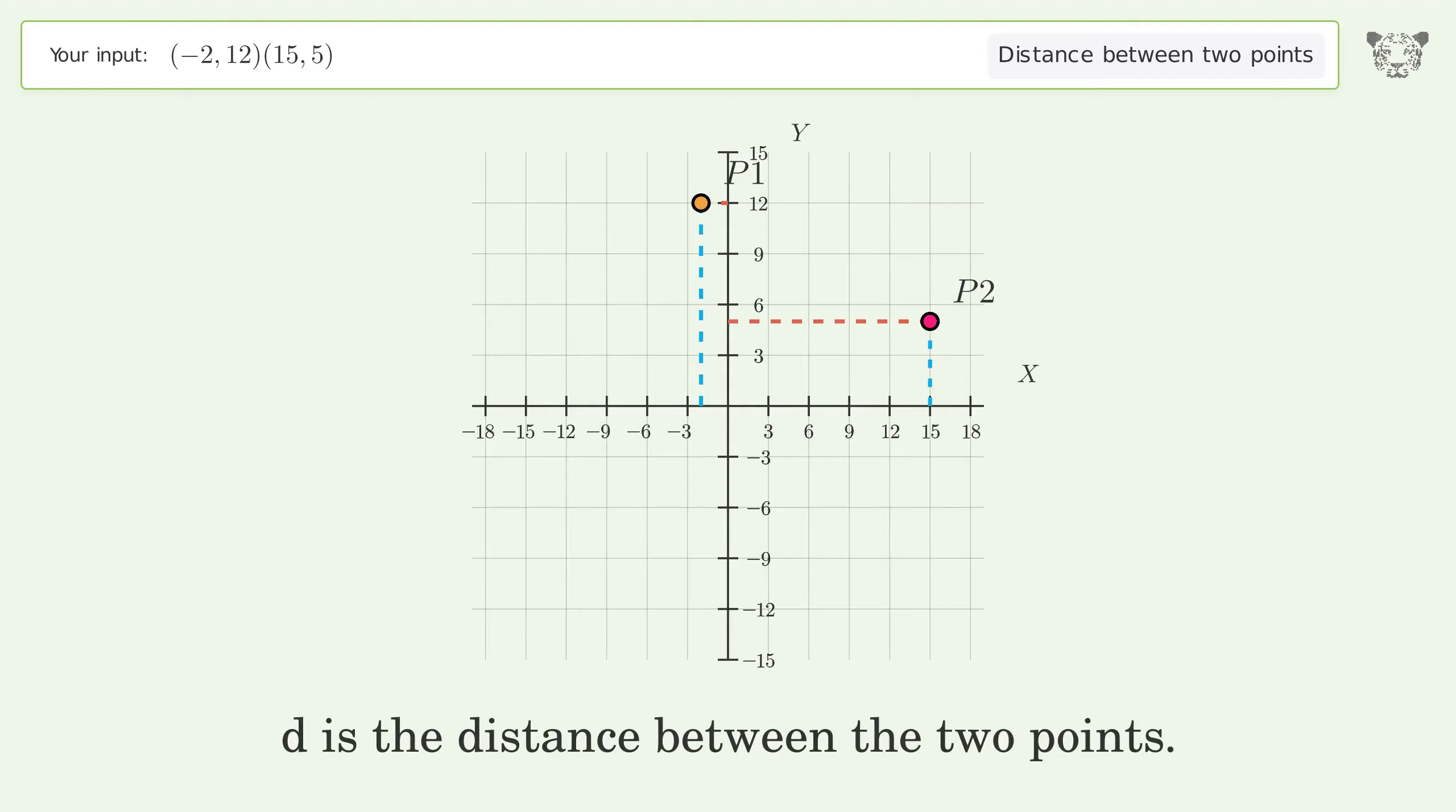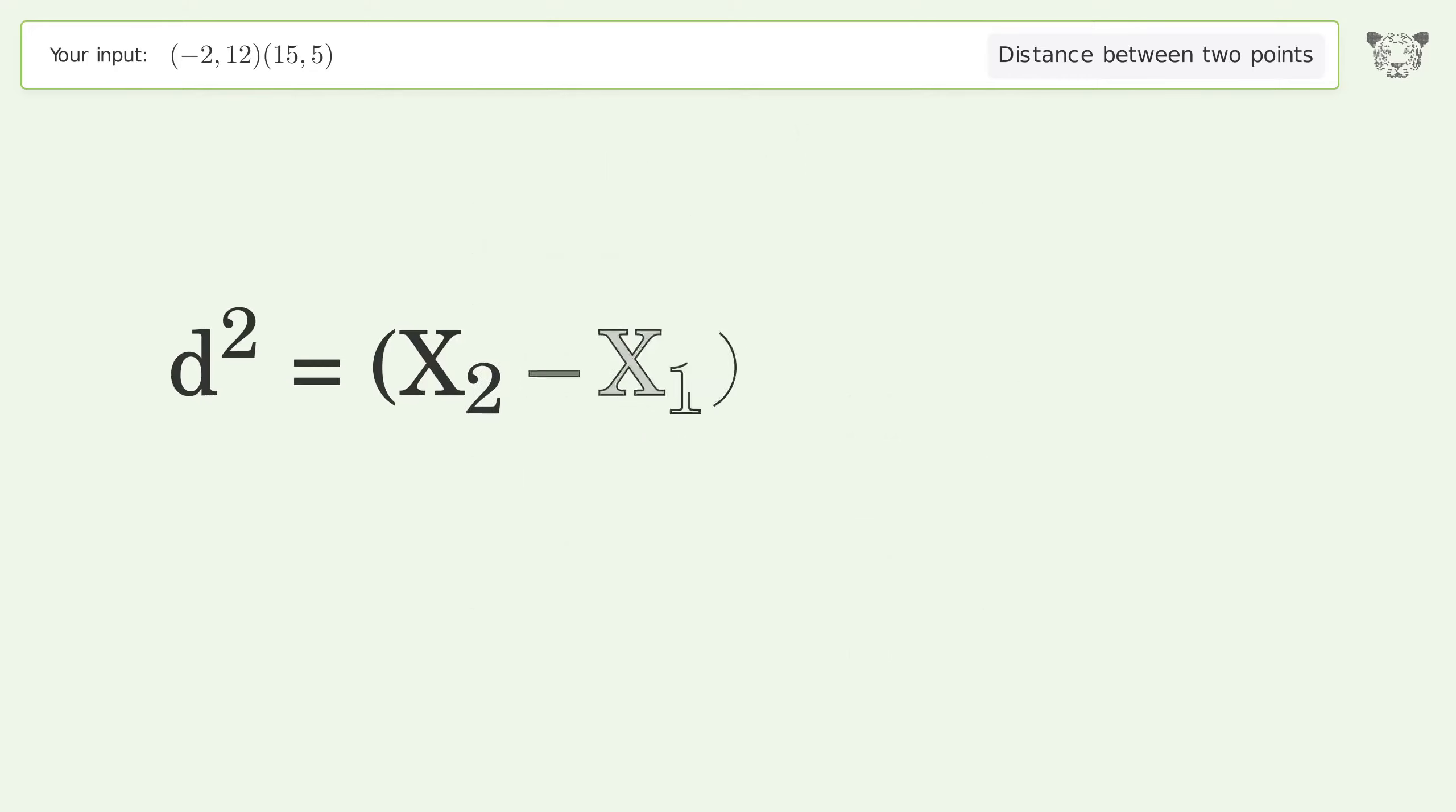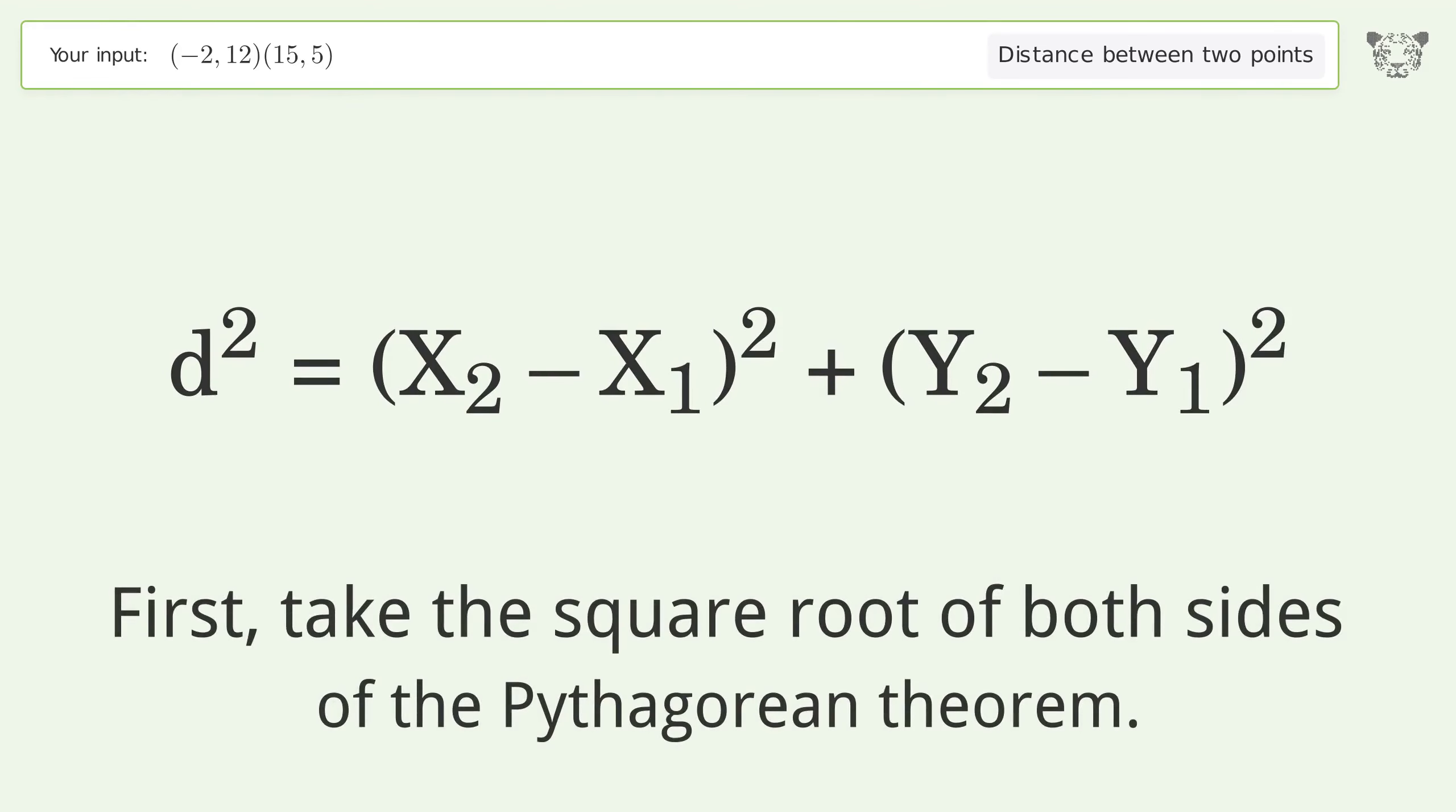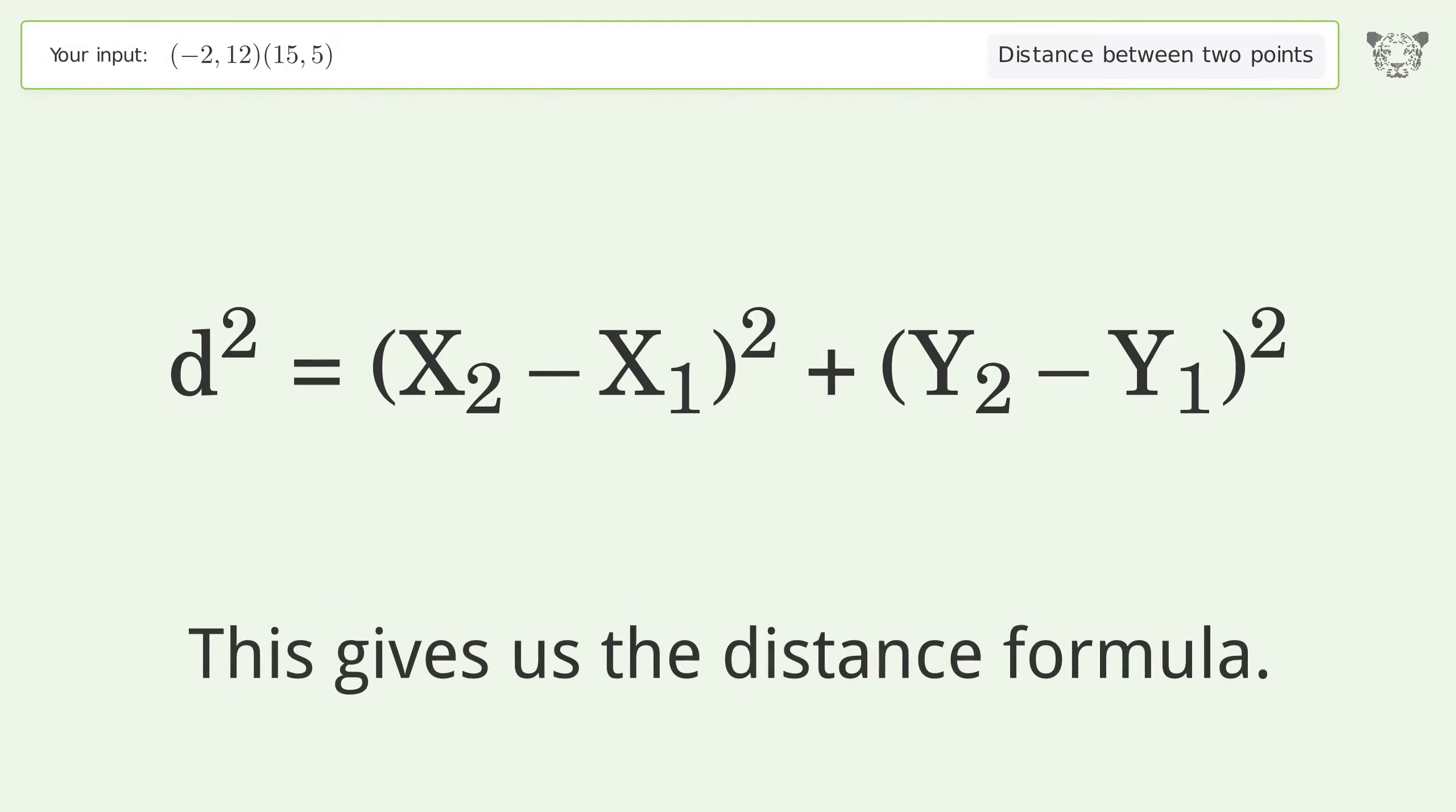d is the distance between the two points. First, take the square root of both sides of the Pythagorean theorem. This gives us the distance formula.